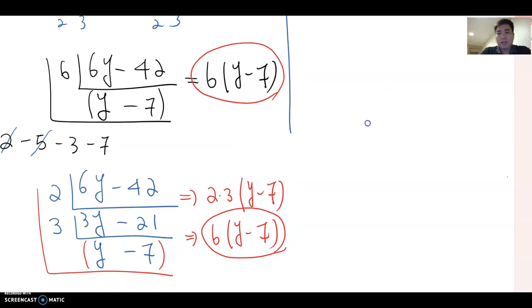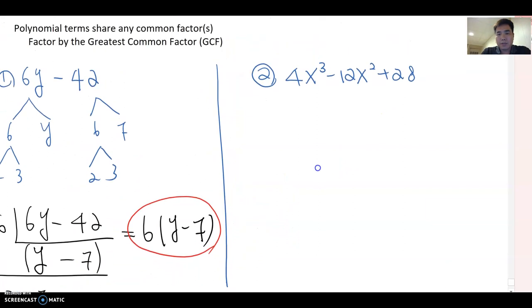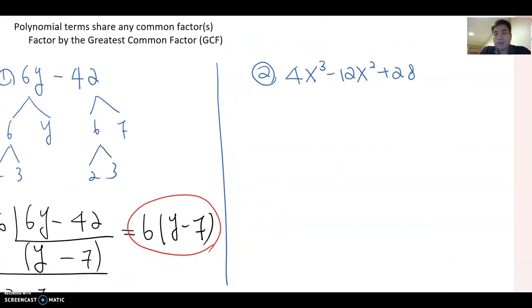Now, let's look at the second example: 4x³ minus 12x² plus 28. So the first two terms, 4x³ and 12x², they are composed of a number and a variable which is x, like 4 times x³ and 12 times x². But the third term is only constant.